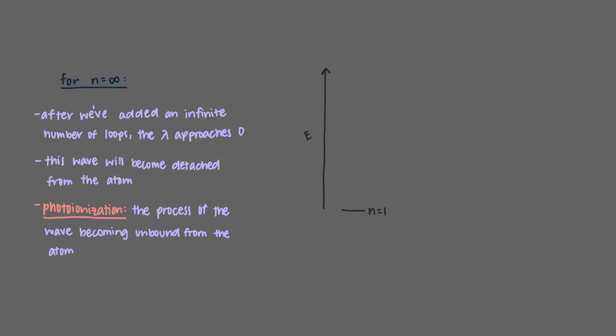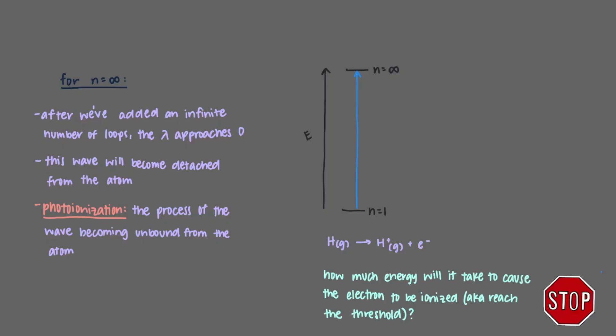Let's go back to our energy level diagram and add n equals infinity. Let's take this ionization process. How much energy will it take to cause the electron to be ionized or, in other words, to reach the threshold?